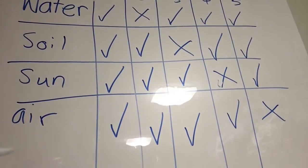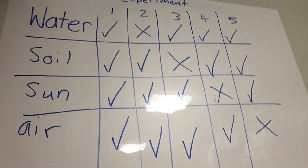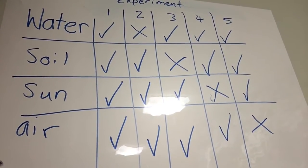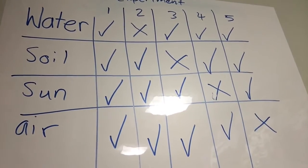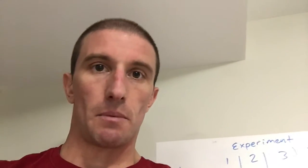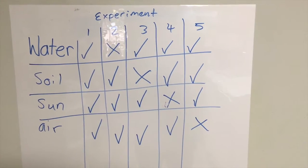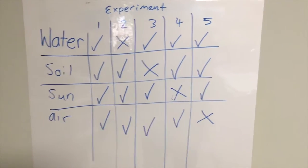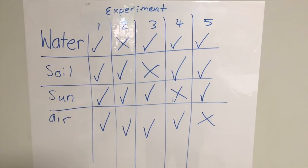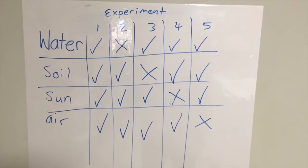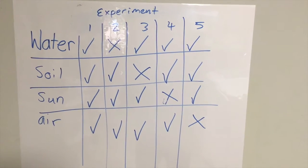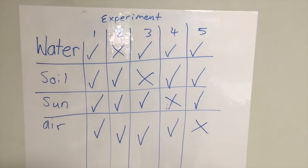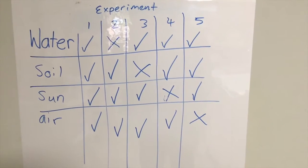By measuring all these plants we'll be able to work out which of those things are most important and see the effect in relationship to number one — the one that's got everything. All of these things are examples of variables. They're things that we can change in the experiment to see their effect. That's a really big science word: variable. So in this experiment, by changing these variables, we're checking how important they are to a plant's growth.